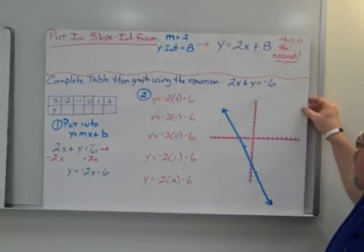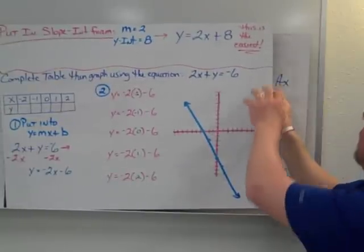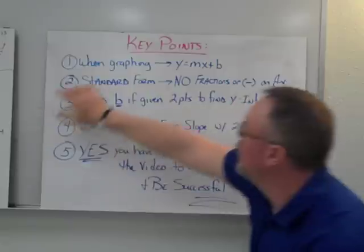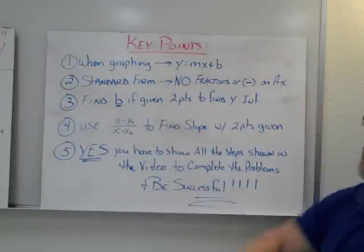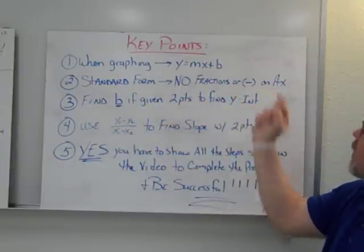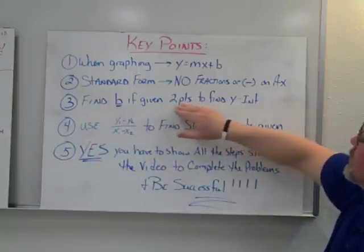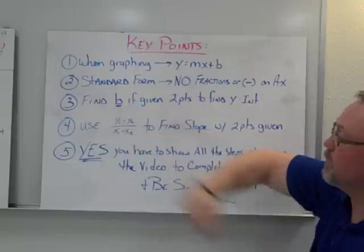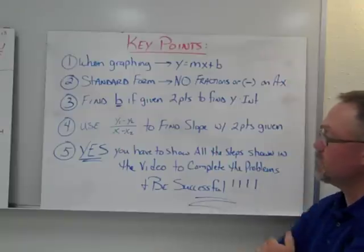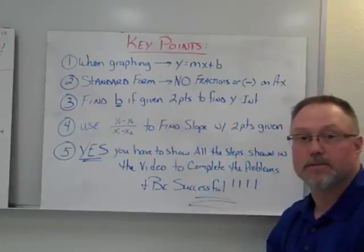That's the end of this section on slope — writing equations and getting those taken care of. Some key points: when graphing, use y equals mx plus b. For standard form, you cannot have fractions or a negative on the first term, the ax. You need to find b when given two points to find the y-intercept. To find slope when given two points, use the slope formula. These are step-by-step processes that you have to work through carefully.